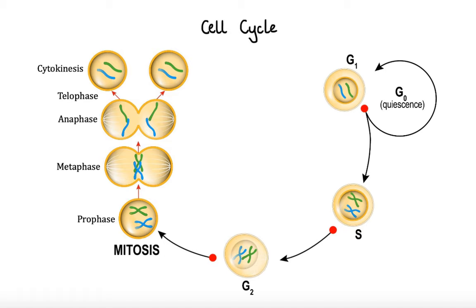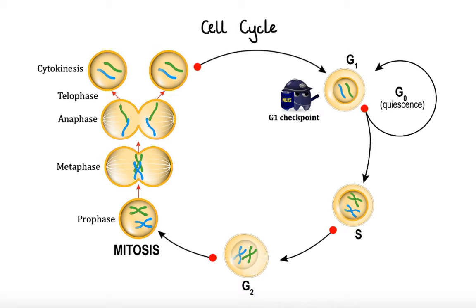Immediately following the M phase, newly formed cells either leave the cycle and become dormant, or return to the G1 phase should they need to divide again. Because the cell cycle is a continuous process, surveillance mechanisms known as checkpoints exist to ensure each phase is completed properly before progression to the next stage. The three main checkpoints are the G1 checkpoint, the G2 checkpoint, and the M checkpoint. Not all cells have to pass through each of these checkpoints in order to replicate.